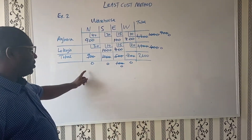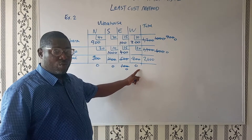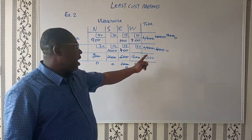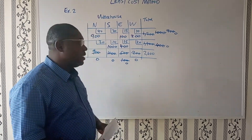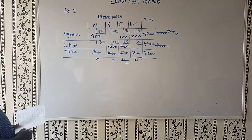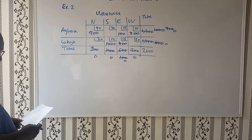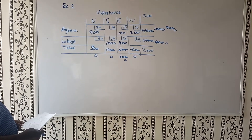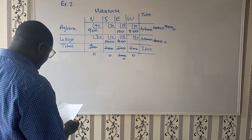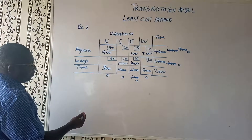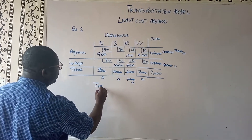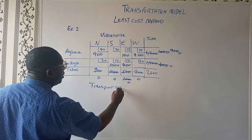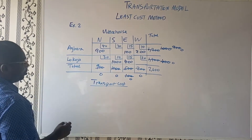So as you can see, we have fully satisfied all the demands and utilised all the supplies from the different supply points. So what we now do is to find the transport costs.